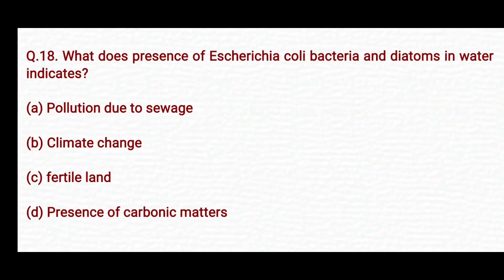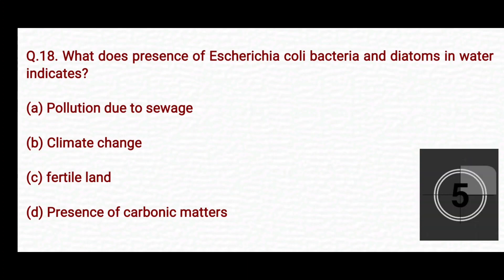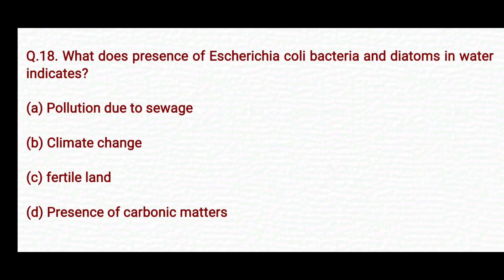What does the presence of Escherichia coli bacteria and diatoms in water indicate? Option A: pollution due to sewage. Option B: climate change. Option C: fertile land. Option D: presence of carbonic matters. The right answer is Option A — pollution due to sewage.